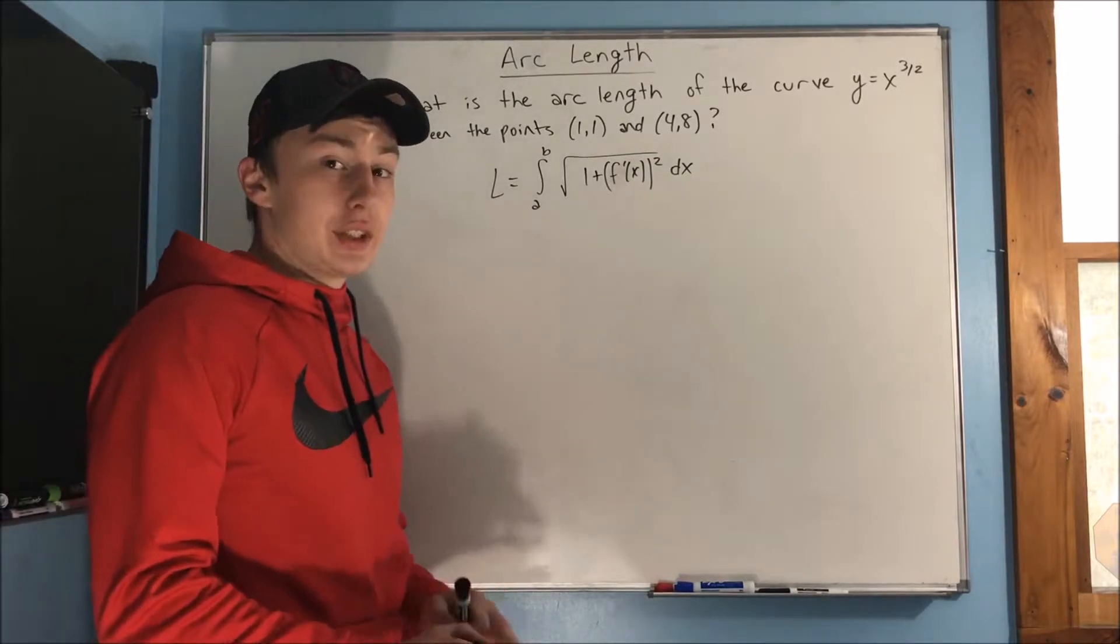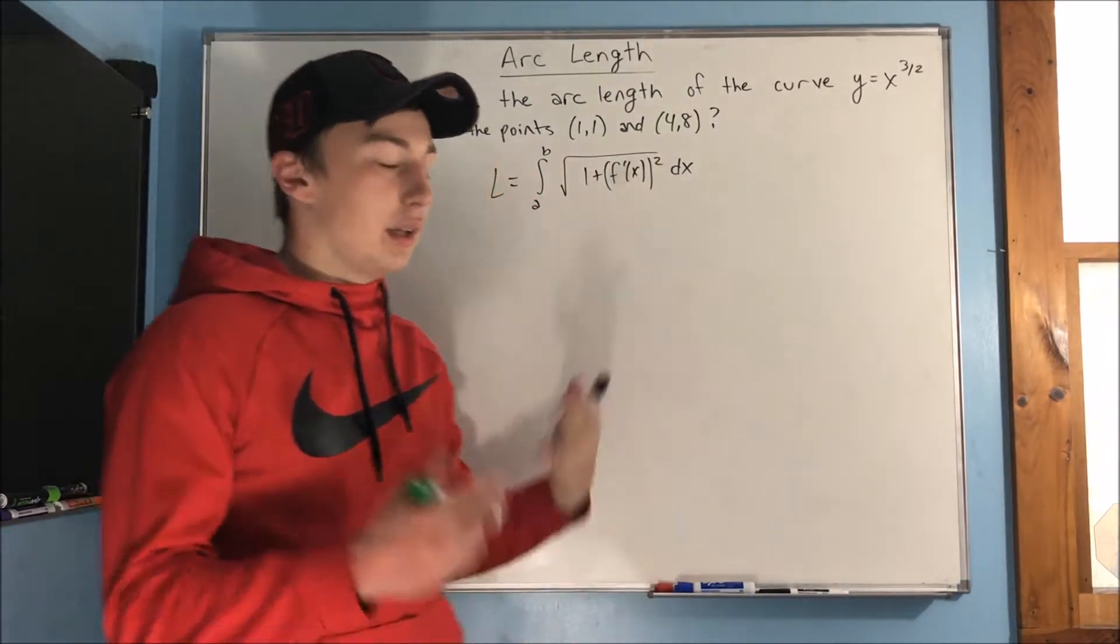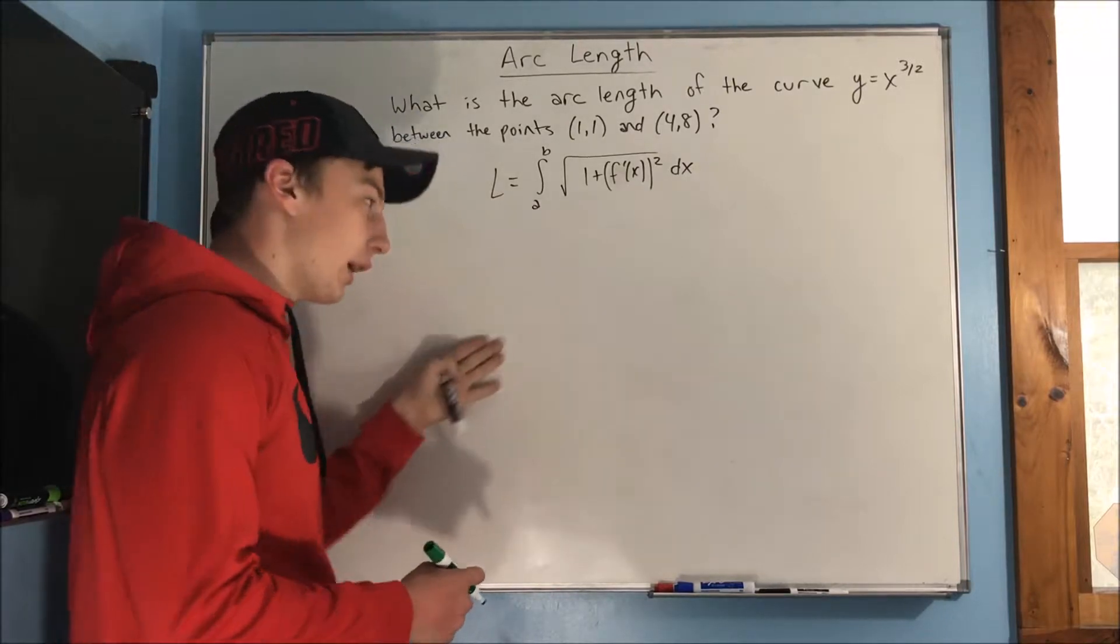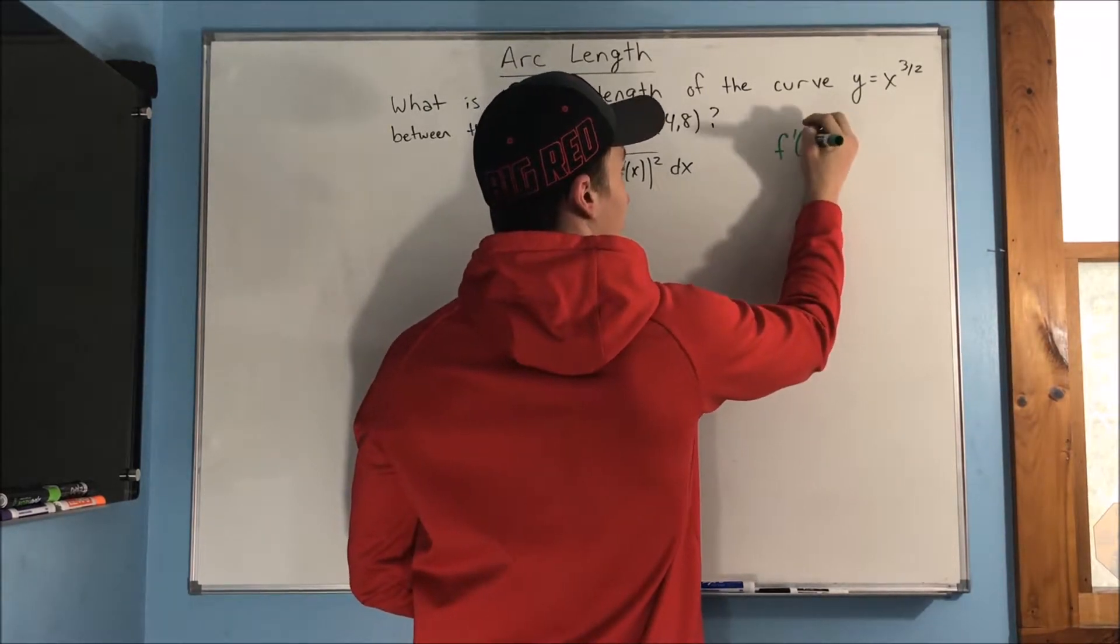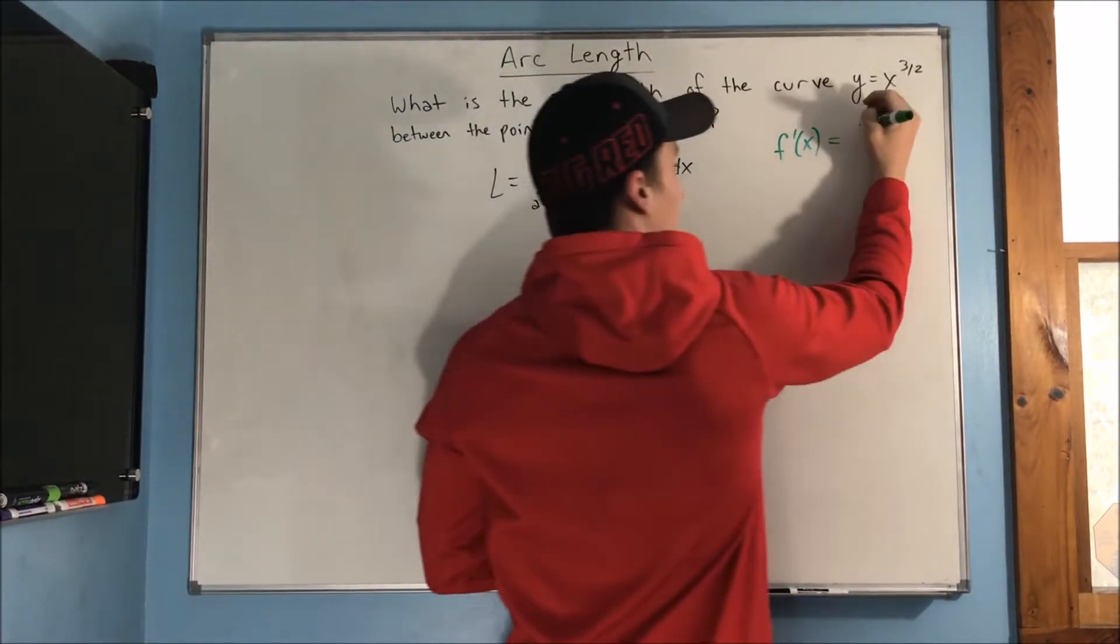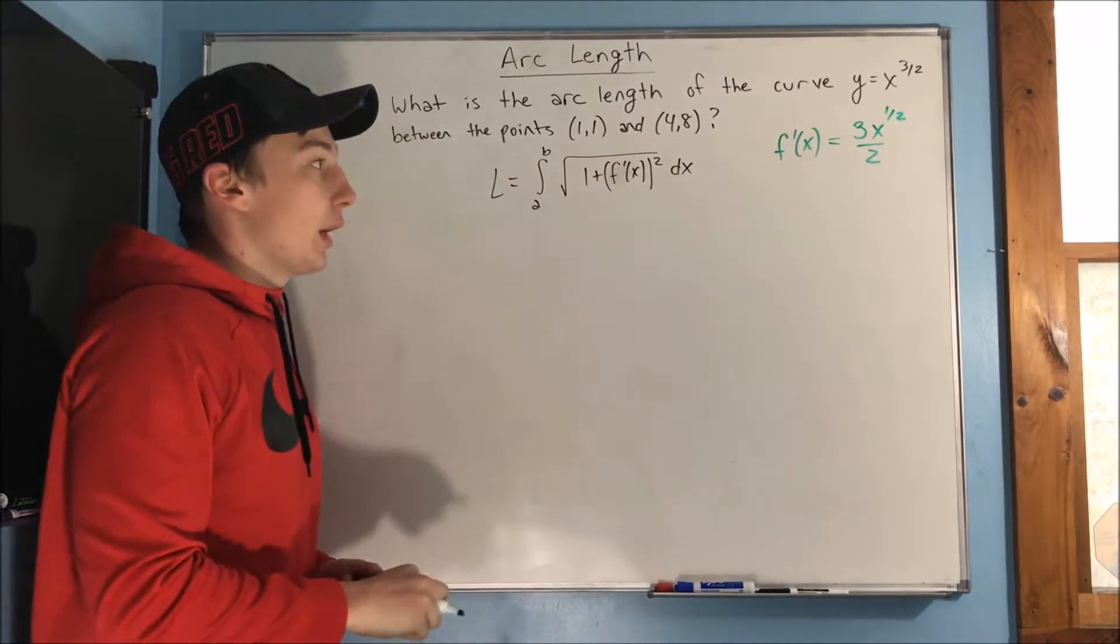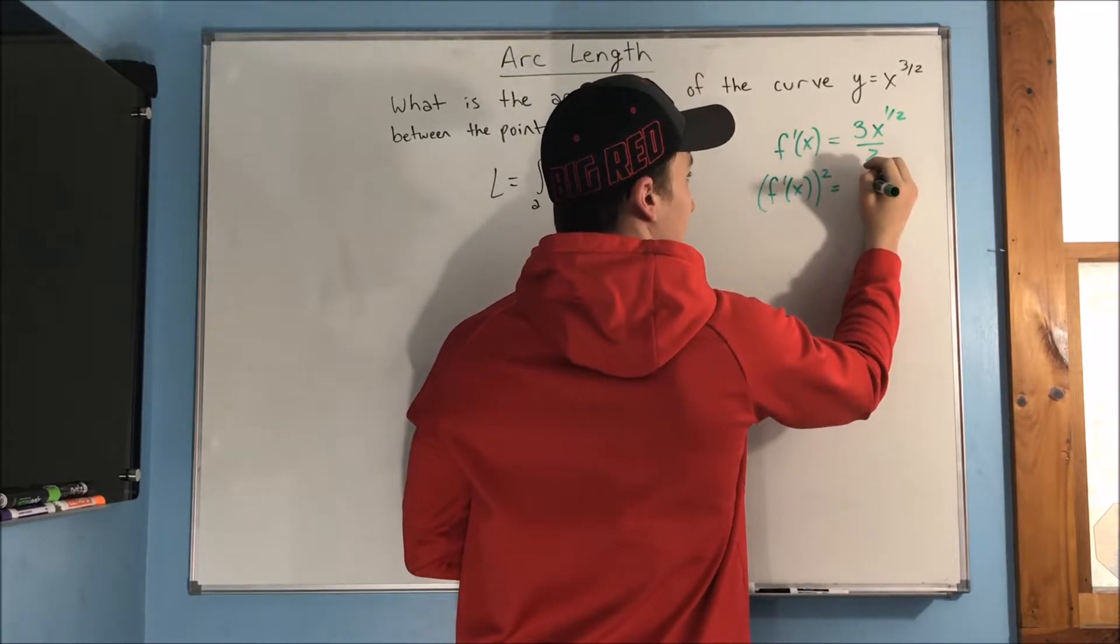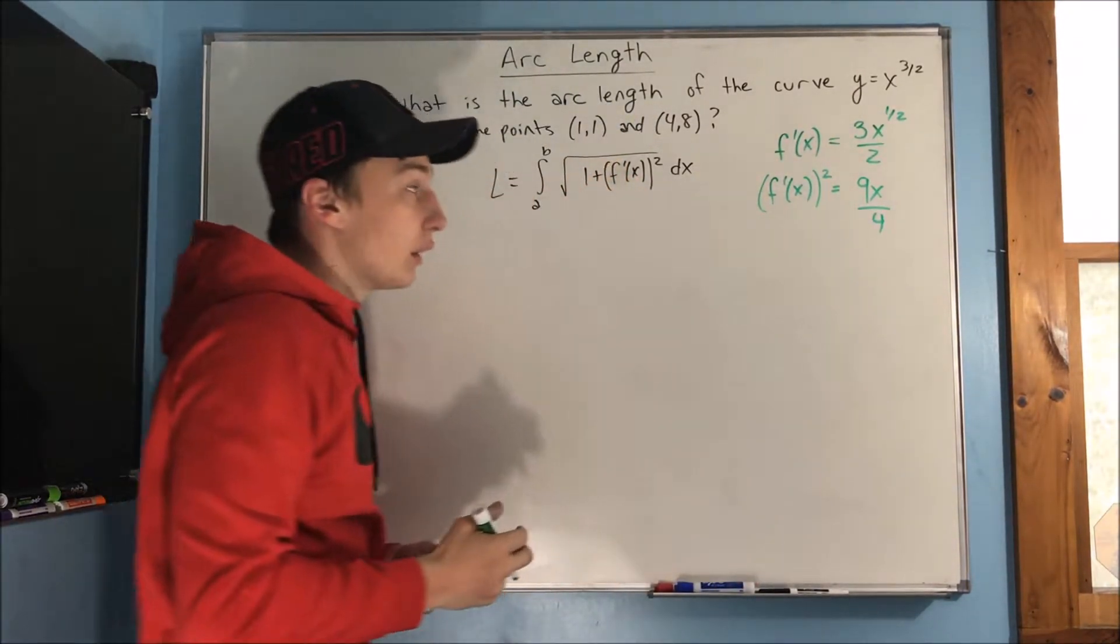So the first thing I would do, just a little suggestion, is write what your f prime of x squared is outside of the problem somewhere over here, because you don't have to write out the arc length formula again to try to figure out what the derivative is and then write it out again to figure out what it is squared. I would just do it on the side here, jot it down. So what's f prime of x, what's the derivative? Well the derivative, that's just 3/2, or 3x over 2, but this x is to the one half. And what would it be squared? Well if we square this, we get 9x over 4.